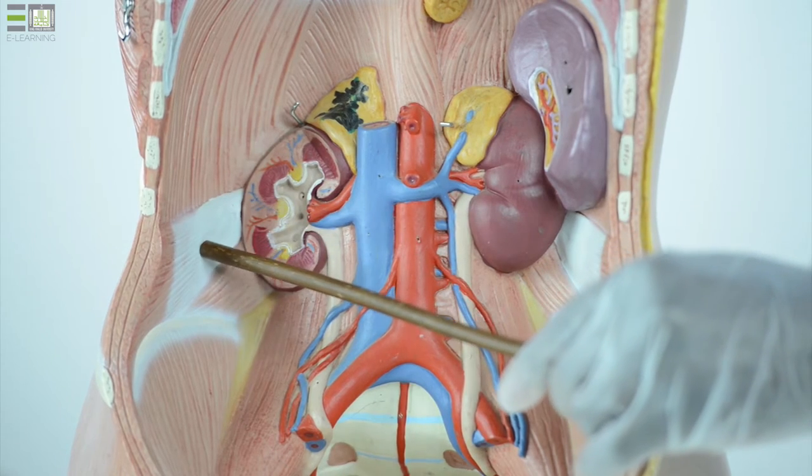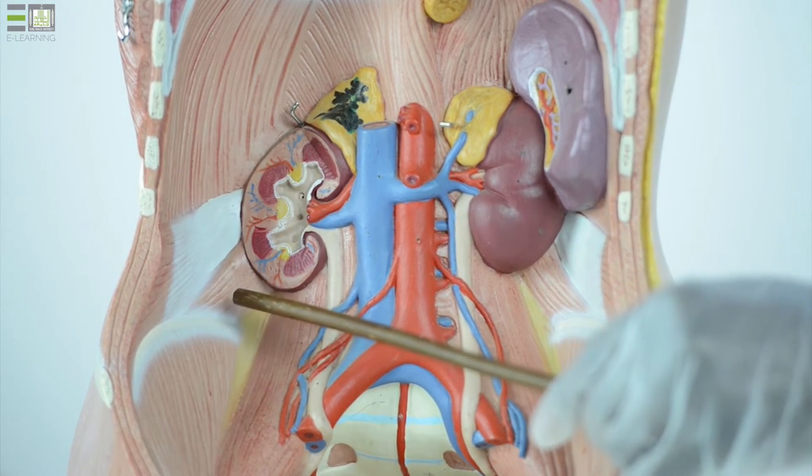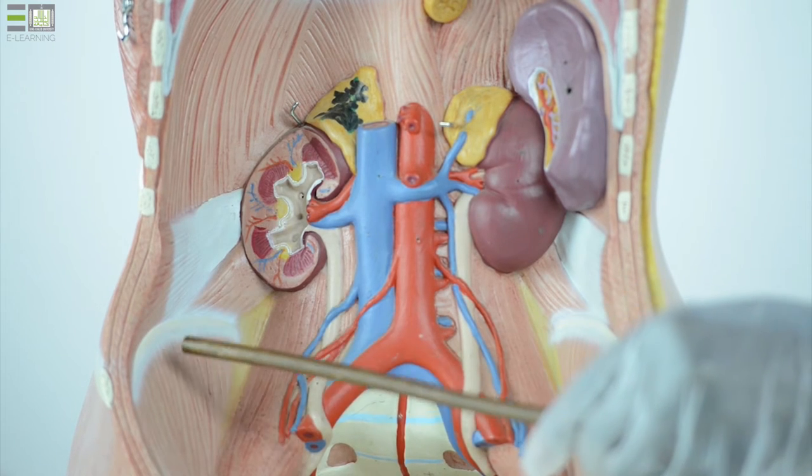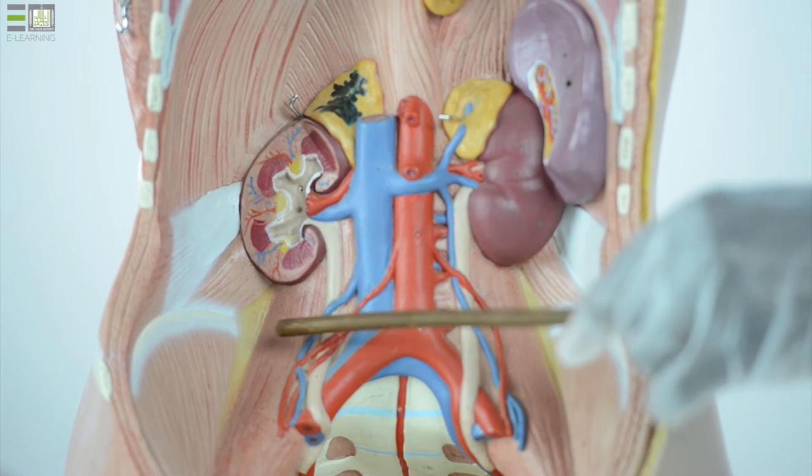This is the diaphragm, transversus abdominis muscle, quadratus lumborum, iliacus, psoas major.